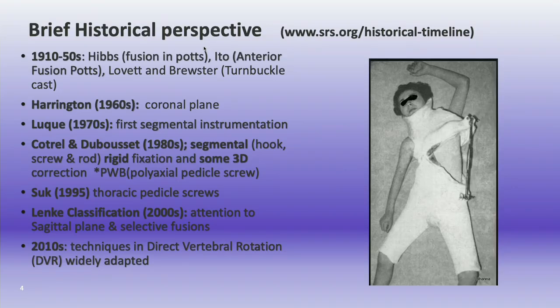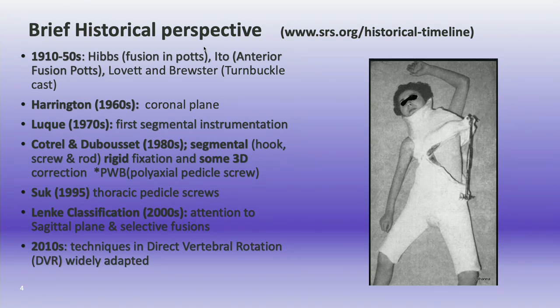I think it's important to have a historical perspective on this. We're changing rather quickly. If you look at the early 1900s, from 1910 to the 50s, we had the advent of Hibbs doing some of the first fusions in Pott's disease, Ito doing anterior fusions, and also the turnbuckle cast. A lot of these corrections were done with releases and osteotomies. I actually recently treated an adult patient who was treated with tibial strut grafts.